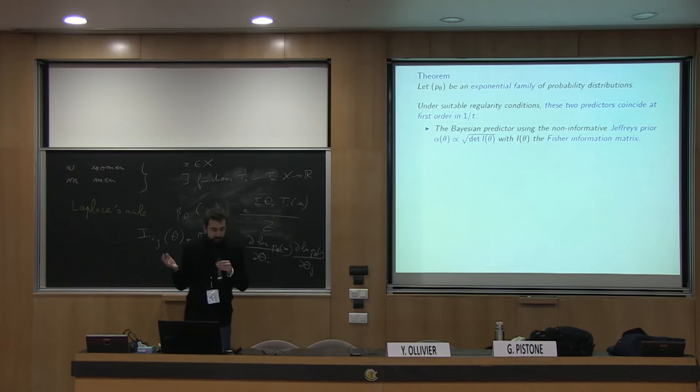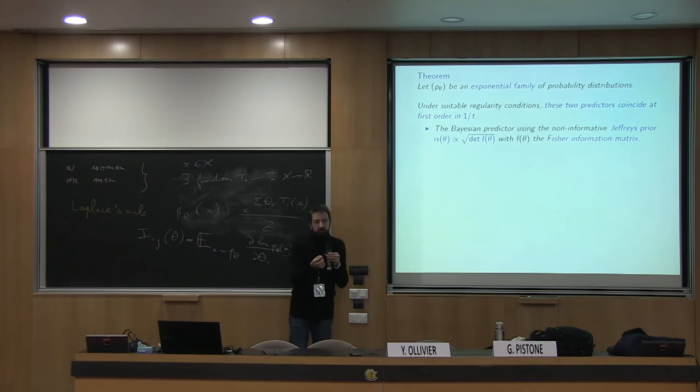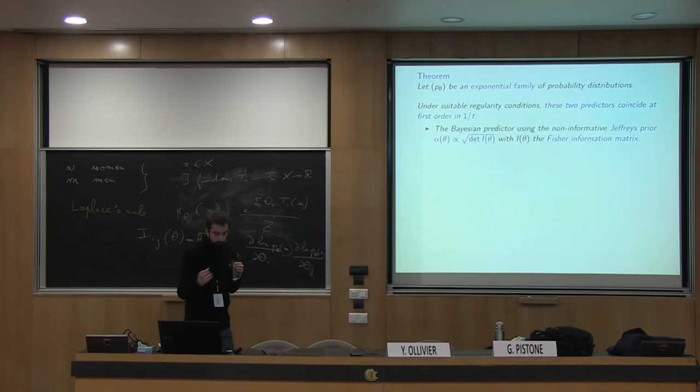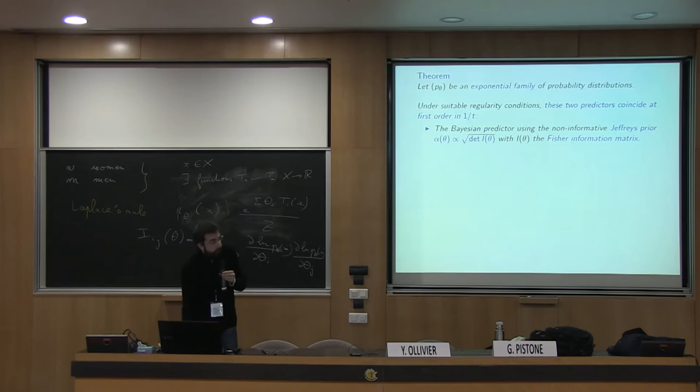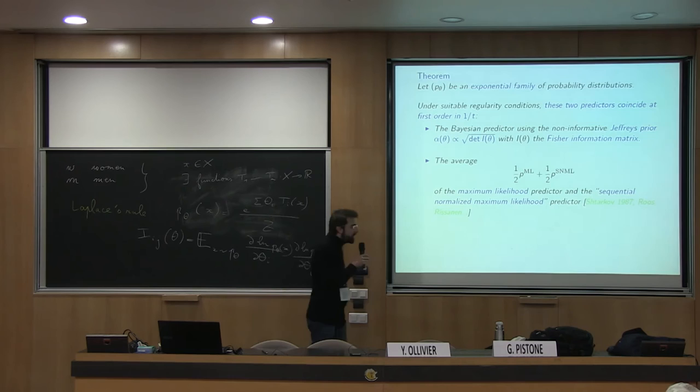Sometimes the Jeffreys prior is finite, sometimes infinite. The theorem holds usually after a few observations when this gives finite volume. So the theorem holds as long as the posterior is finite. You have this Bayesian predictor — somehow the only canonical Bayesian predictor — and it can be easily approximated by changing the maximum likelihood estimator in a way I'm going to explain.